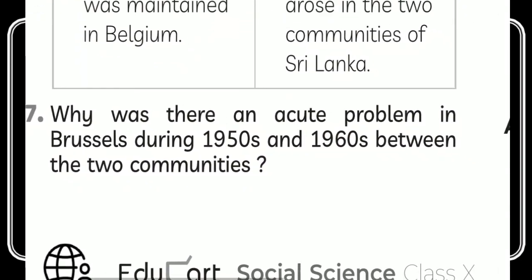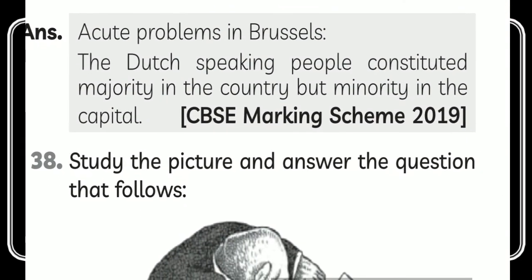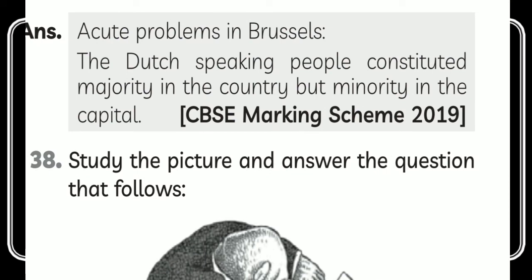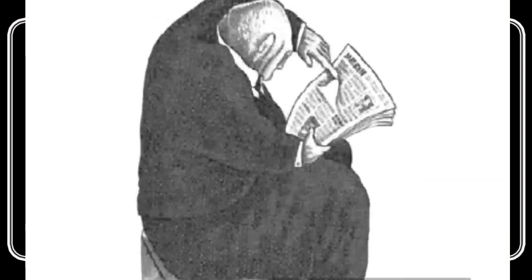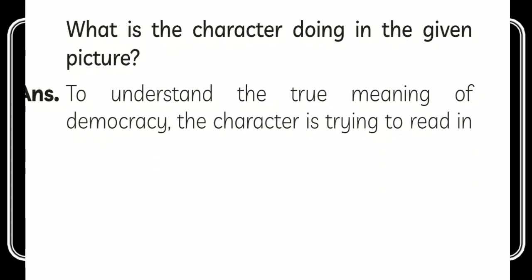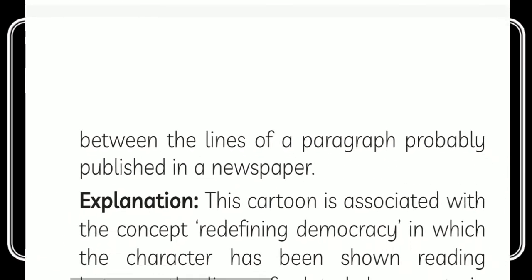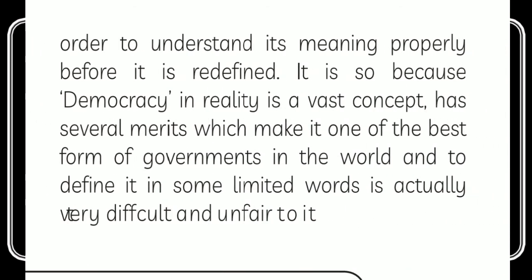Why was there an acute problem in Brussels during the 1950s and 1960s? The Dutch-speaking people considered themselves the majority in the country but were a minority in the capital. The final question involves studying a picture — the character in the picture is trying to read between the lines to understand the true meaning of democracy. This cartoon is associated with the concept of redefining democracy, showing the character reading between the lines of a document to understand its meaning before it is redefined.